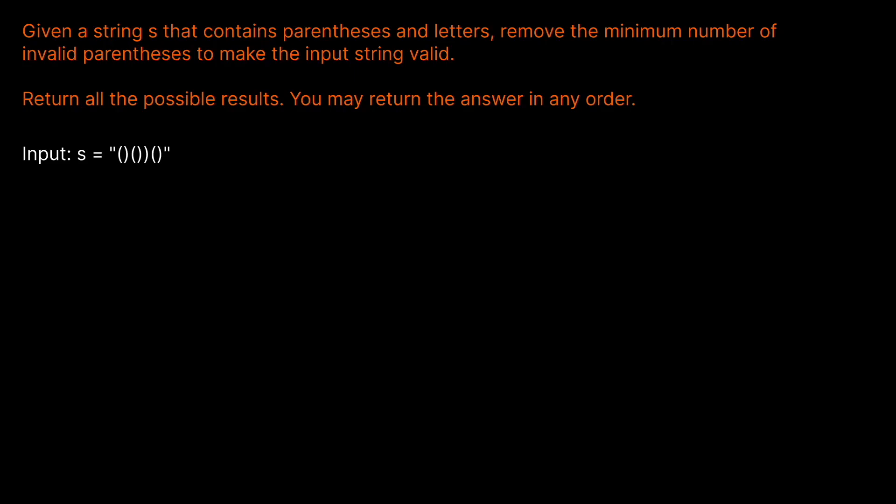Welcome back to the Cracking FAANG YouTube channel. Today we're going to be solving LeetCode problem 301: Remove Invalid Parentheses. Given a string S that contains parentheses and letters, remove the minimum number of invalid parentheses to make the input string valid. Return all possible results — you may return the answer in any order.